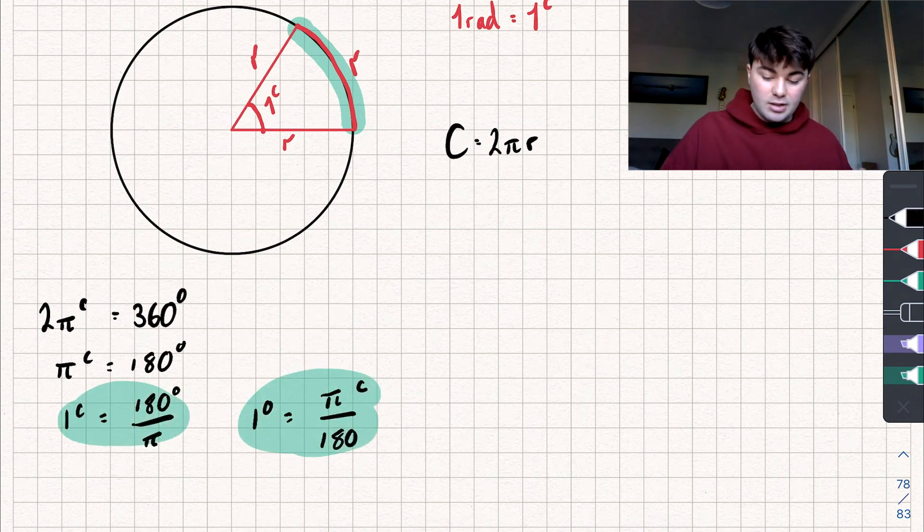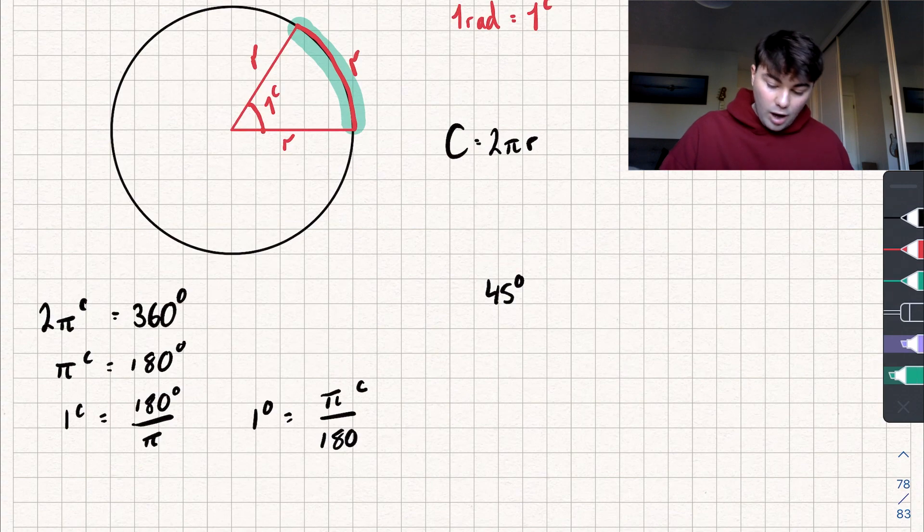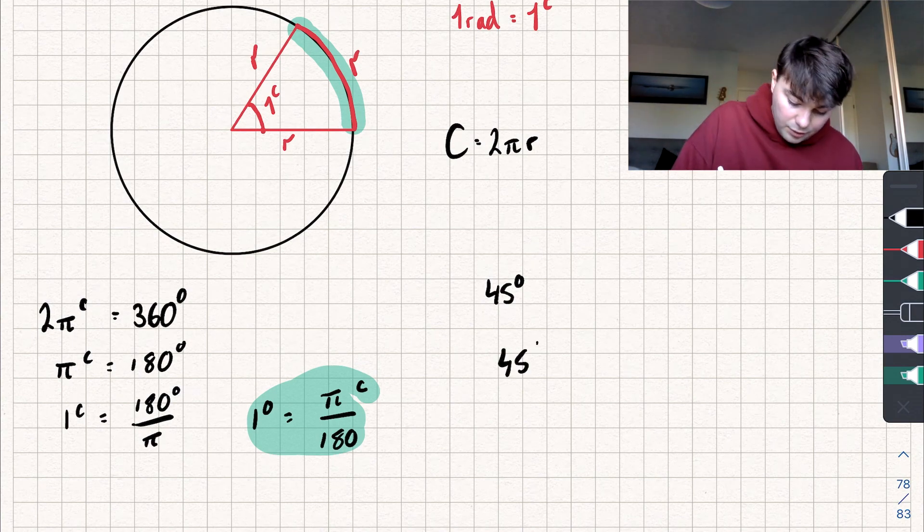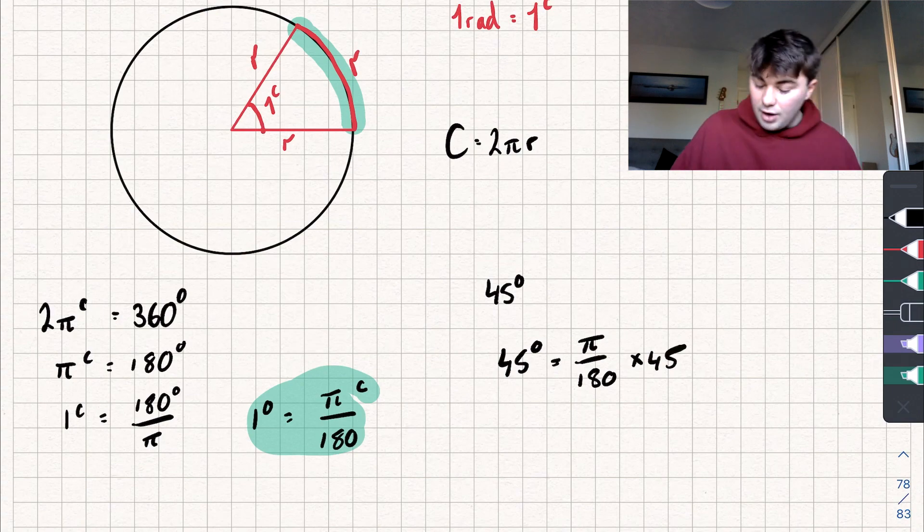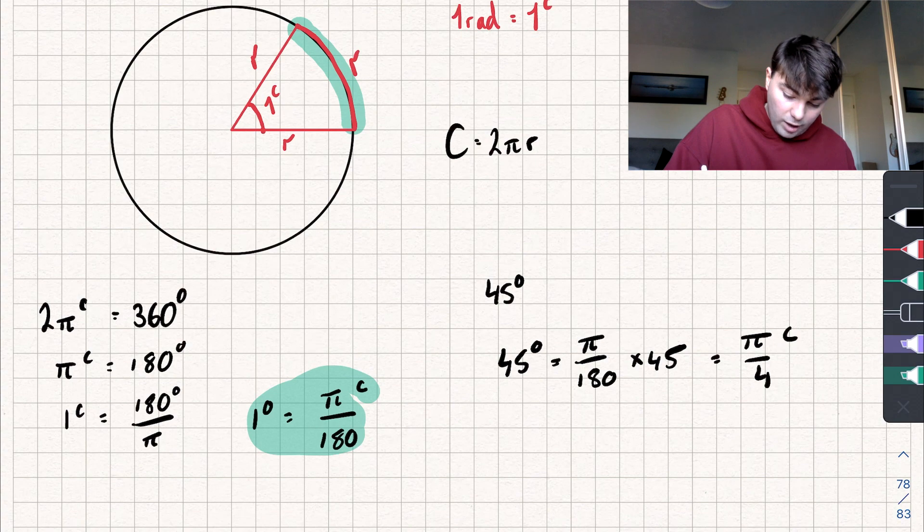Now we can use these two bits of information to convert really easily. Say we had for an example 45 degrees and I want to know what is that in radians. I could use this equality and I could just multiply both sides by 45, because if I do that we get that 45 degrees is going to be equal to π over 180 multiplied by 45 radians. So we've got π divided by 180 multiplied by 45 and we get an answer of π by 4 radians.